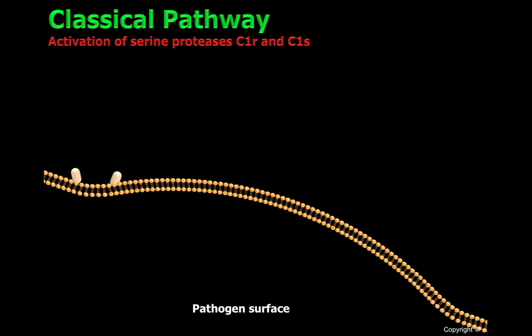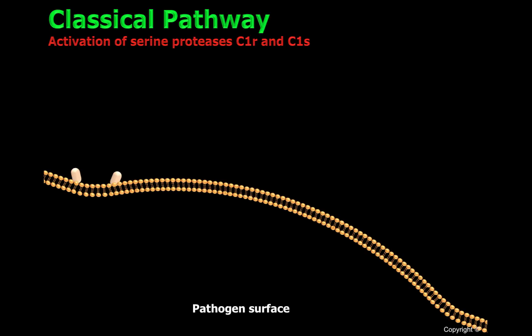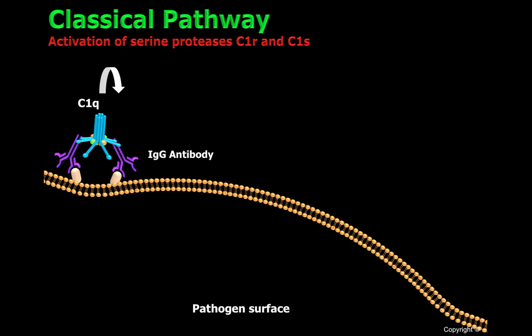When a single IgM or two IgGs recognize pathogens, C1-Q will bind to the constant region of the antibodies, or FC region. And as a consequence of this interaction, the protein enzyme C1-R will get activated. These serine proteases will be able to cleave and activate C1-S.